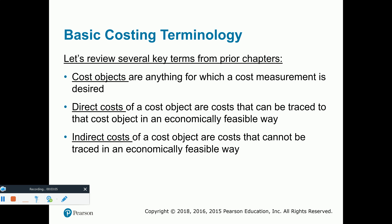Indirect costs are usually overhead items — for example, the electricity bill for the manufacturing plant, the tax bill, the rent bill, the custodial staff, the kitchen staff, the maintenance staff. These are costs necessary to run the manufacturing plant, but it is very difficult to see a direct line between these costs and the actual inventory items. So we will come up with an allocation method in order to assign those costs to each item we are producing.